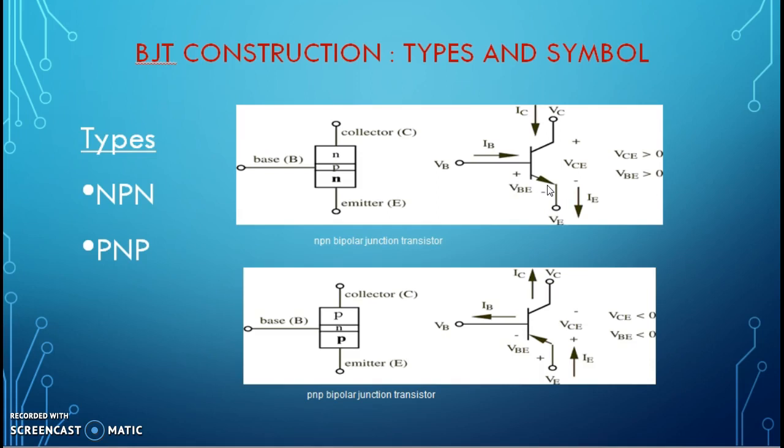And to distinguish the type, arrow is shown from P to N. In this symbol also, we can see that emitter is P, base is N, so arrow is indicating from P to N. Thus, there is emitter, base, and collector.